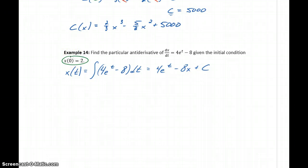Then again, we'll make use of this initial condition. We know that x(0) should be equal to 2. So that means 4e^0 minus 8 times 0 plus c should be equal to 2.